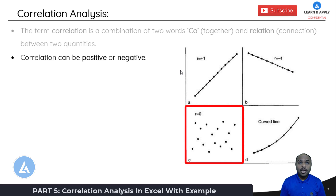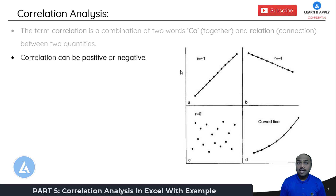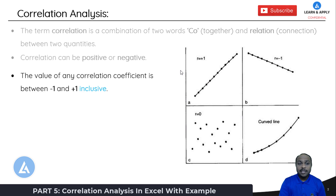There can also be no correlation between the variables, as indicated by the third picture, and the fourth picture indicates the curve correlation between the variables. The strength of correlation and whether it is positive or negative is indicated by the correlation coefficient.